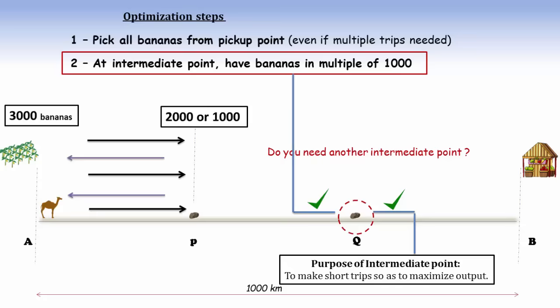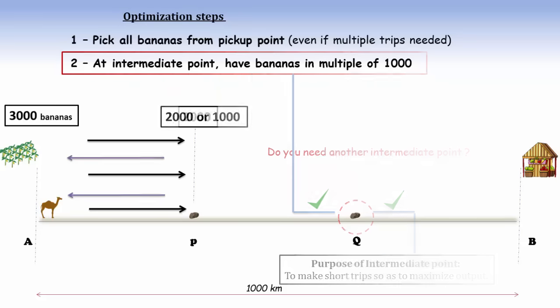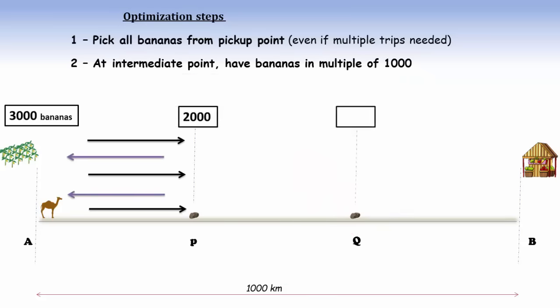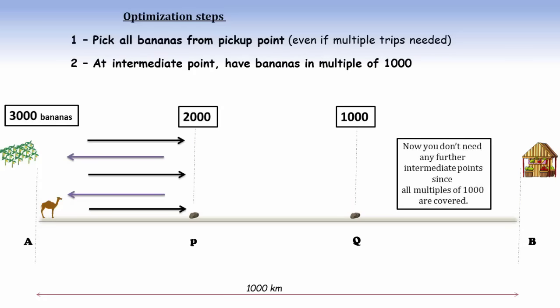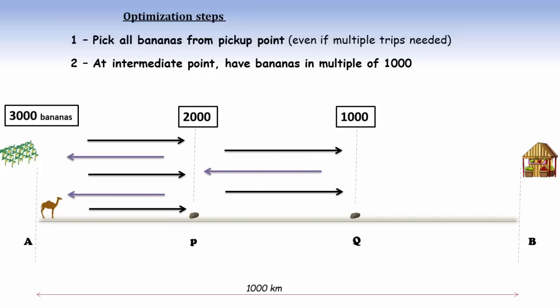If the point P has 2000 bananas, then we can try to have 1000 bananas at point Q. But now there won't be any necessity for another drop point as we have covered all the multiples of 1000. From point P to point Q, the camel would make two forward trips and one backward trip. And from point Q to the market, the camel would make only a single forward trip.